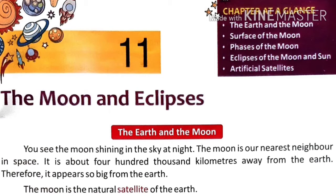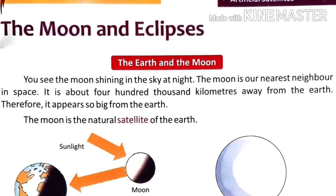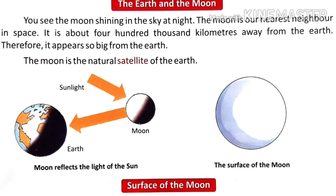The Moon is a natural satellite of the Earth. As you can see in the figure, here is the sunlight, which is the light from the Sun. The Moon reflects the light of the Sun. On the right side is shown the surface of the Moon.